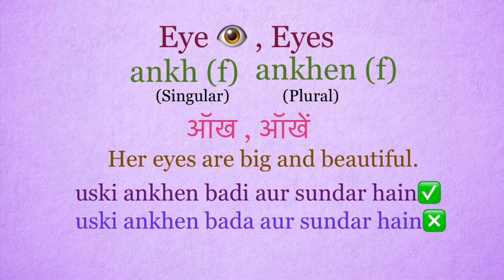Eye: aankh. Eyes: aankhain. It's a feminine word. Her eyes are big and beautiful. Right sentence: Uski aankhain badi aur sundar hain. Wrong sentence: Uski aankhain bada aur sundar hain.